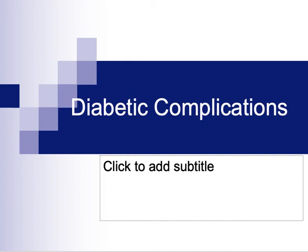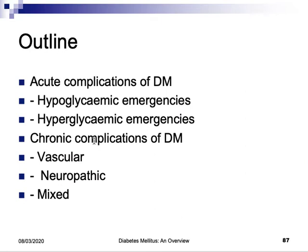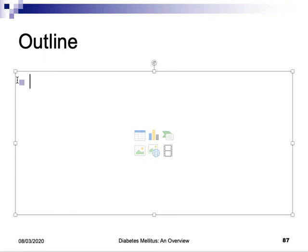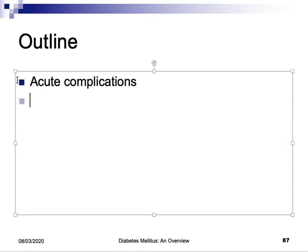Hello everyone, welcome back. This is the third lecture related to diabetes, and in this lecture we are going to talk about the complications of diabetes. Diabetes complications can be divided into two main categories: acute complications and long-term or chronic complications.